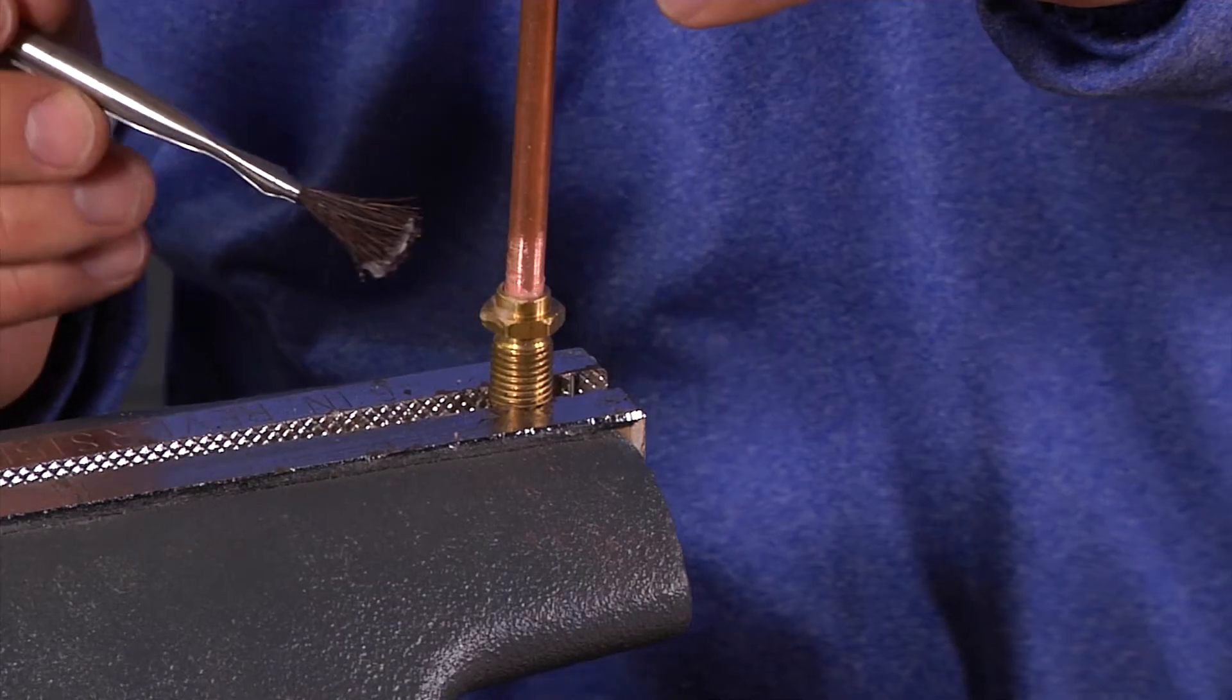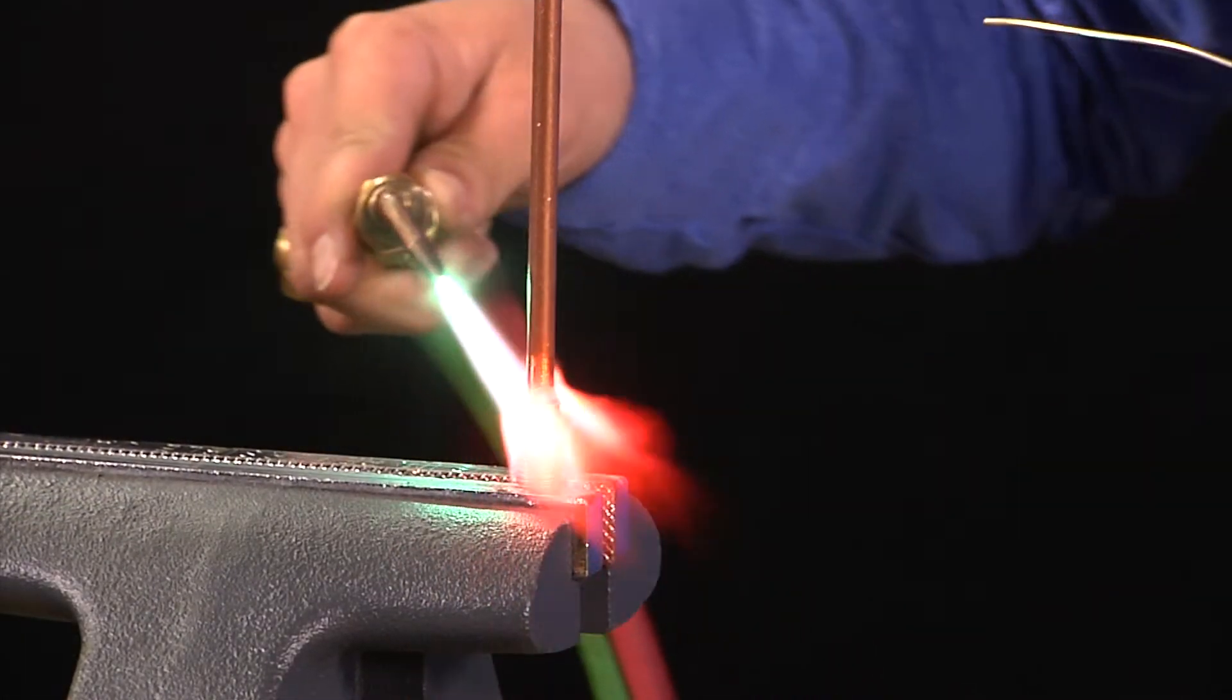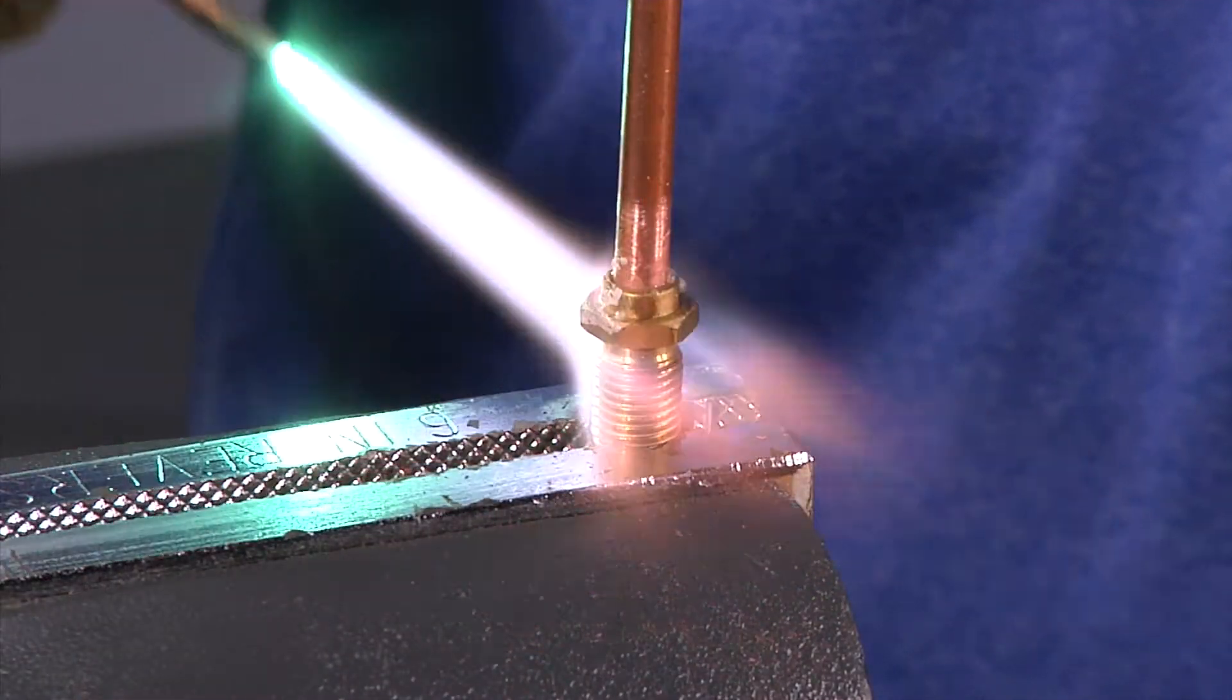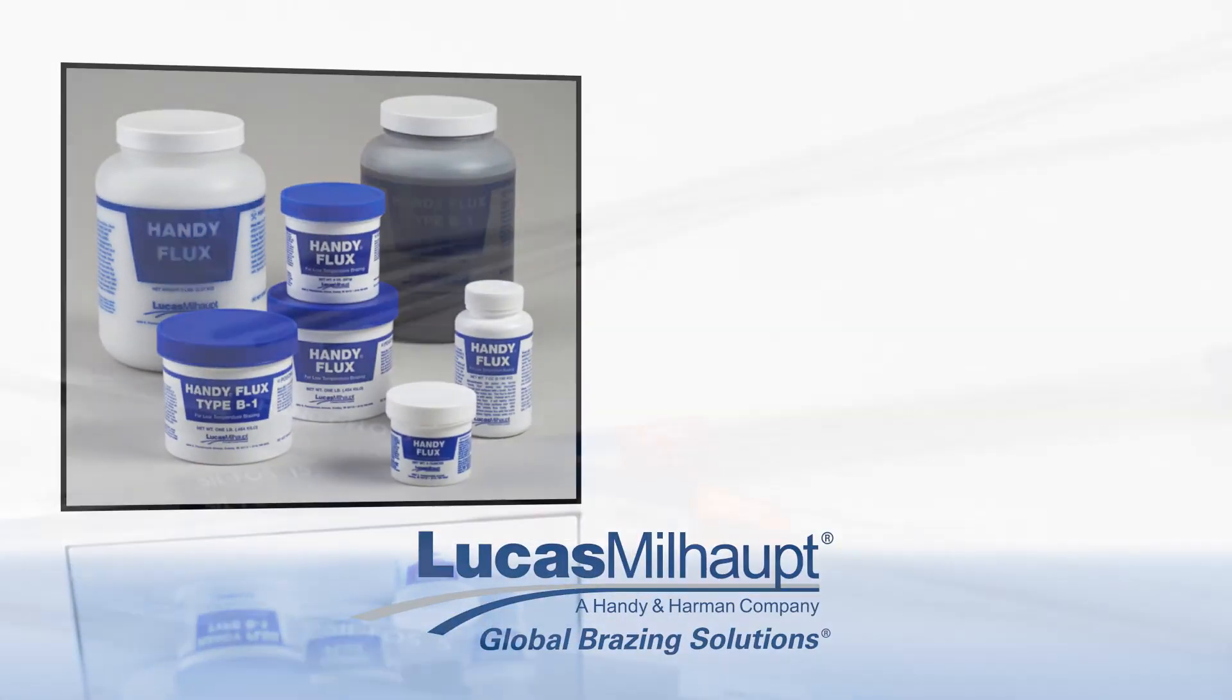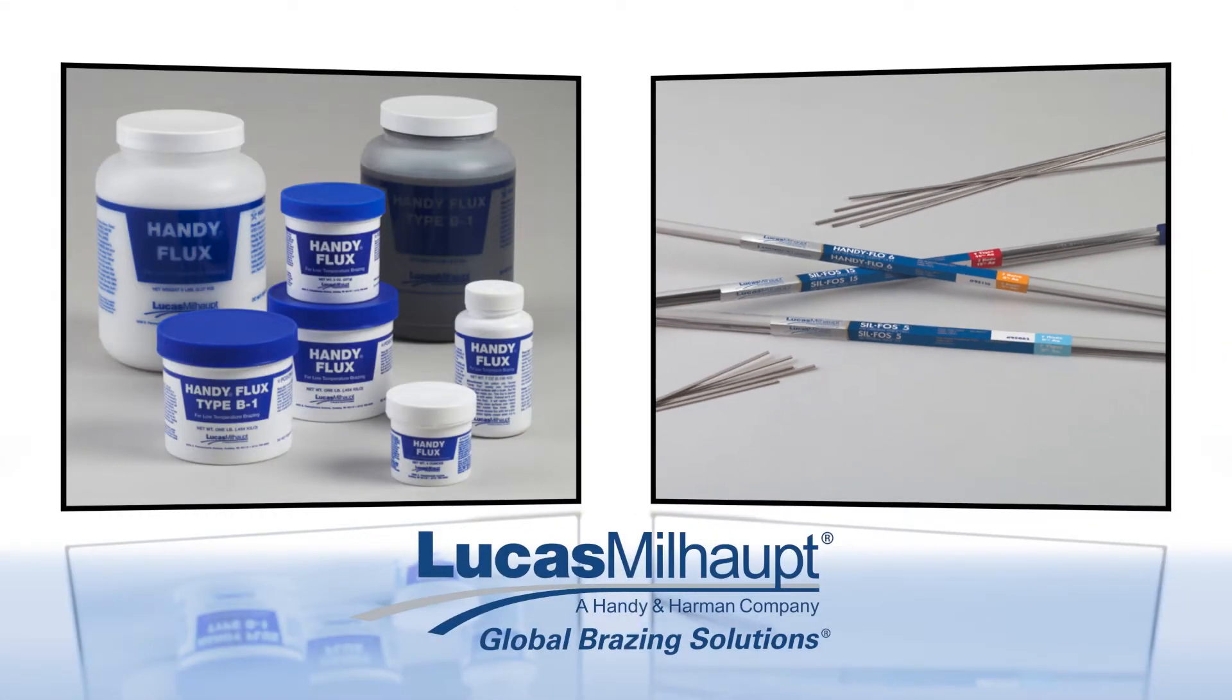After you apply flux, start braising as soon as possible so it doesn't dry out or flake off the parts when handling. Be sure to choose a flux that's formulated for the specific metals, temperatures, and conditions of the braising application.